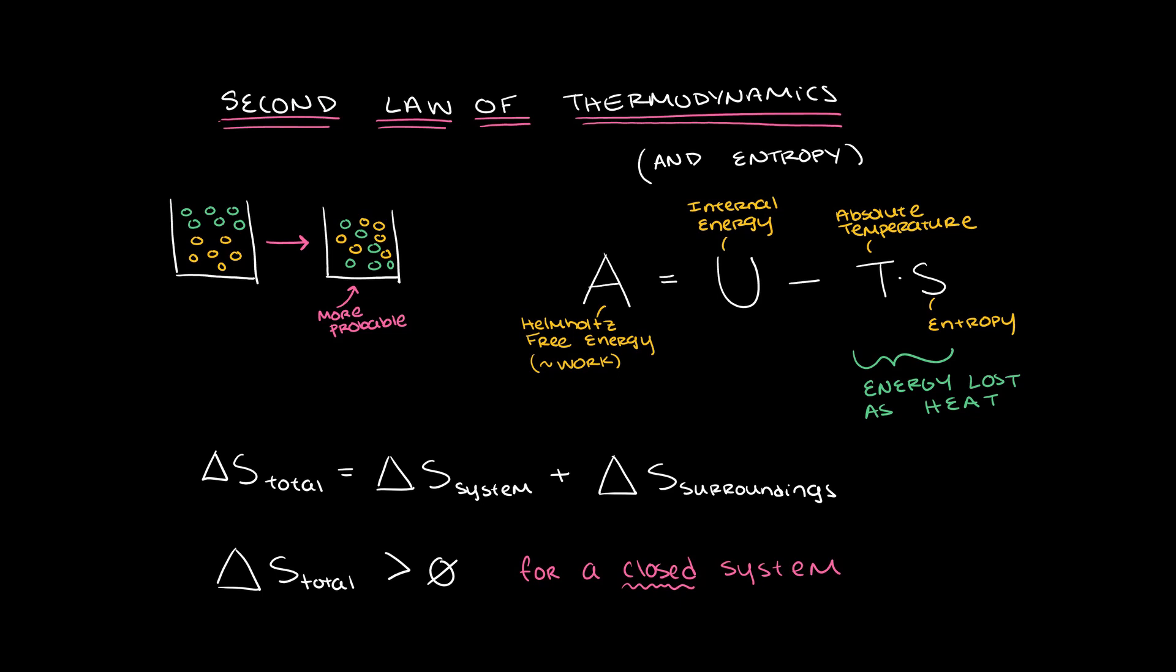Entropy, which is proportional to the inherent disorder in a system, will always increase in a closed system. However, entropy could possibly decrease in an open system if the surroundings see a larger increase in entropy, such that the overall entropy of the universe still increases. Do you see why it is so important to clearly define your system and surroundings?